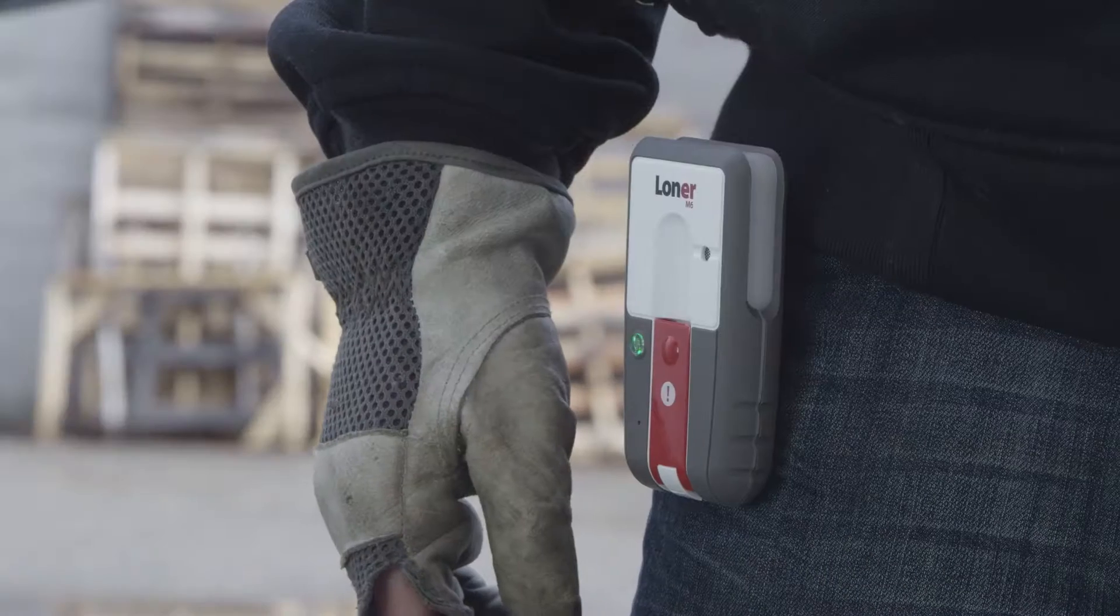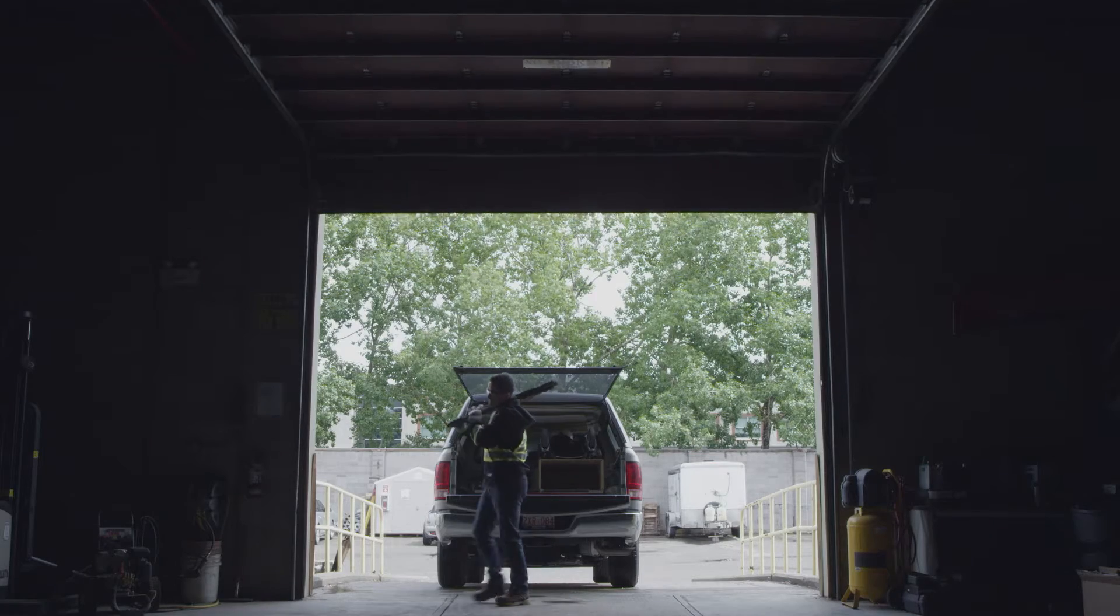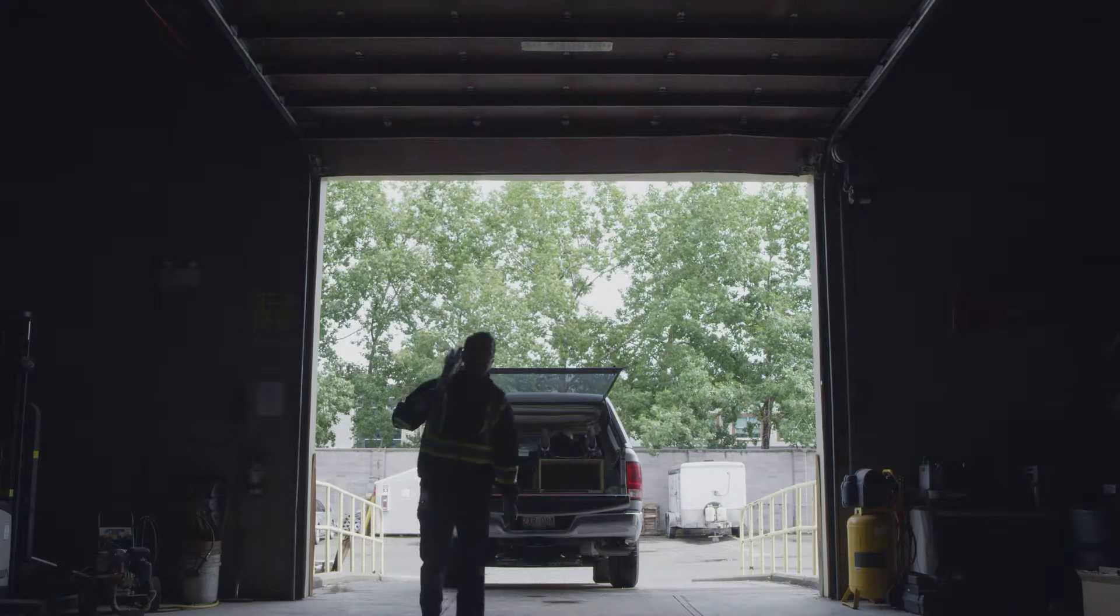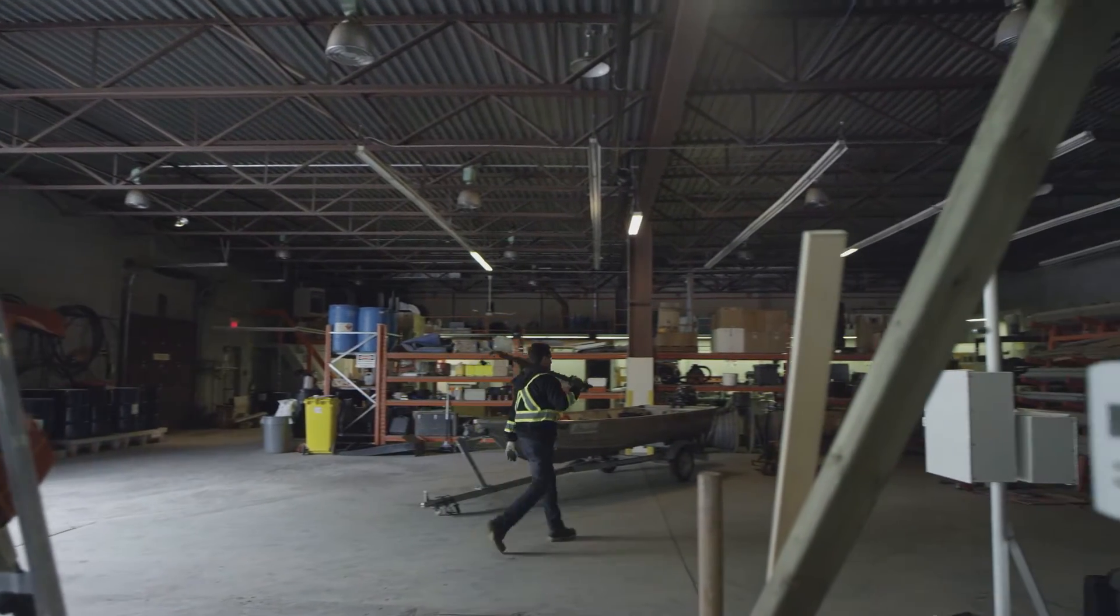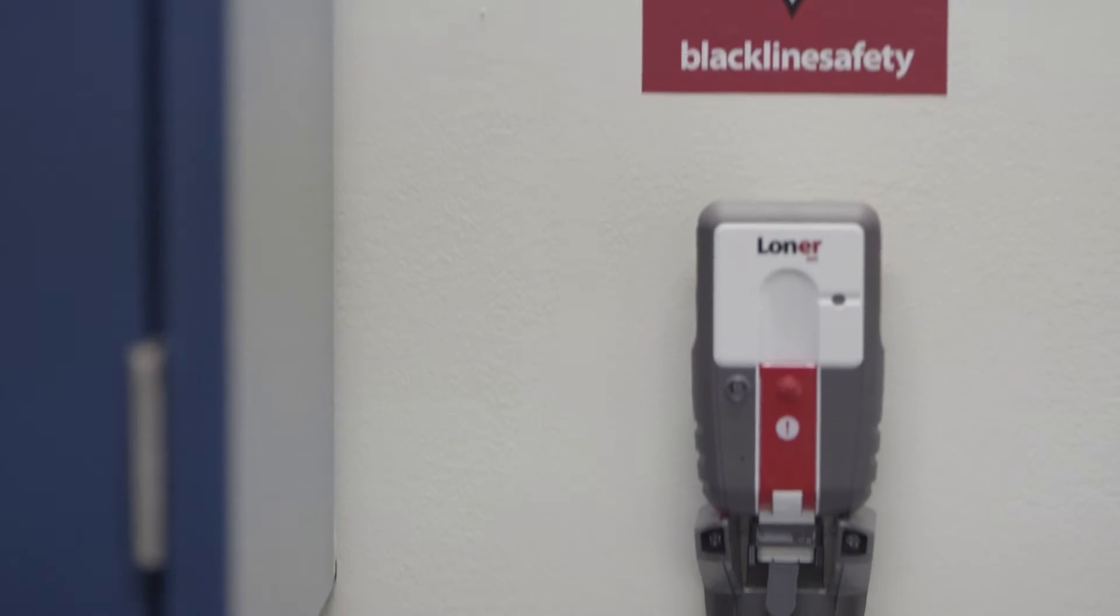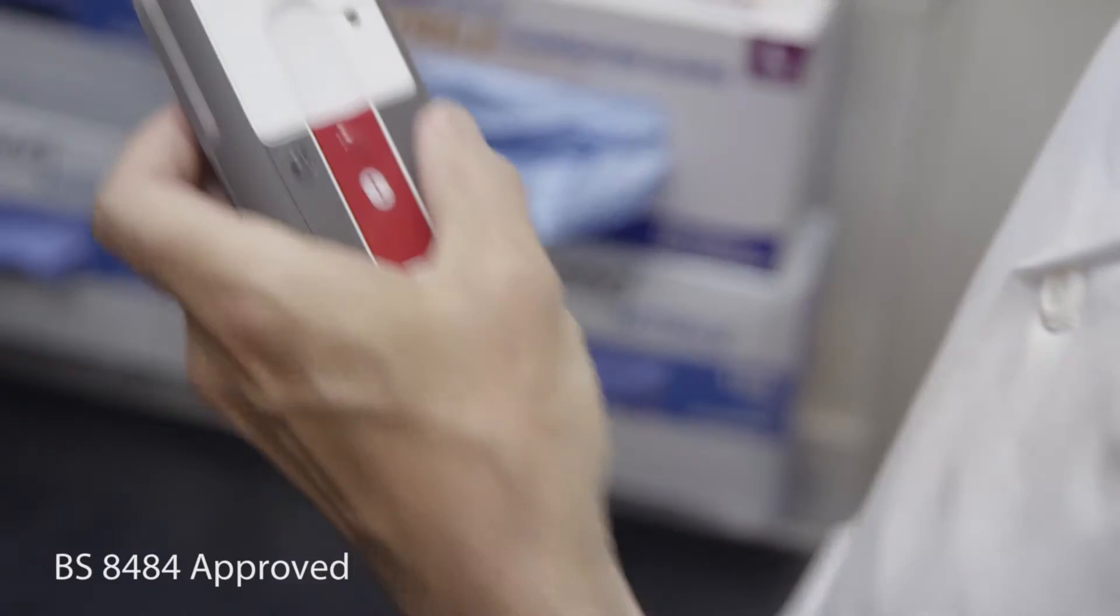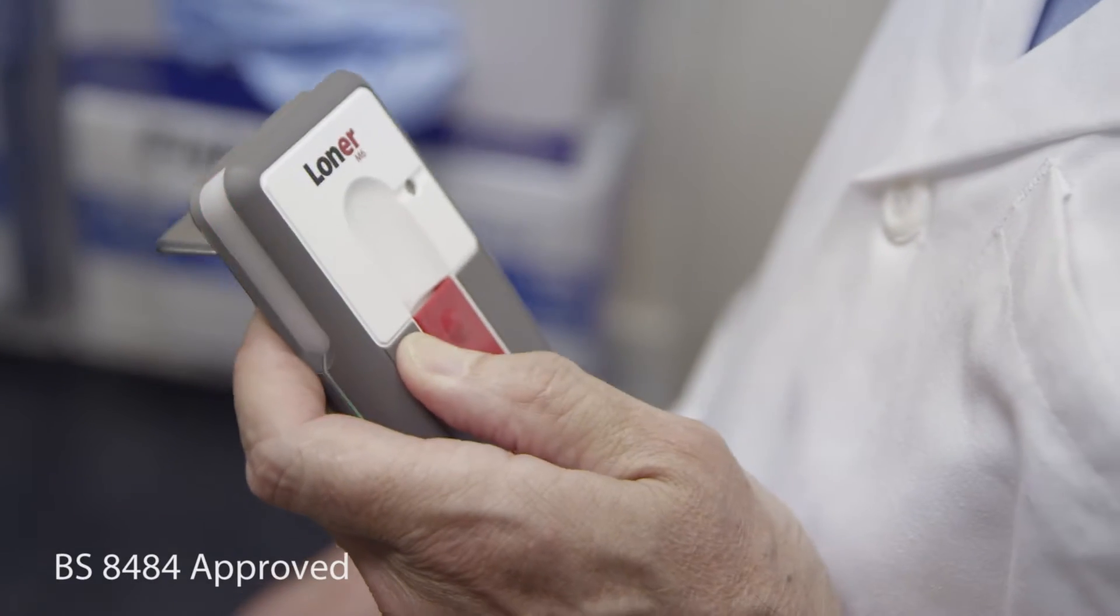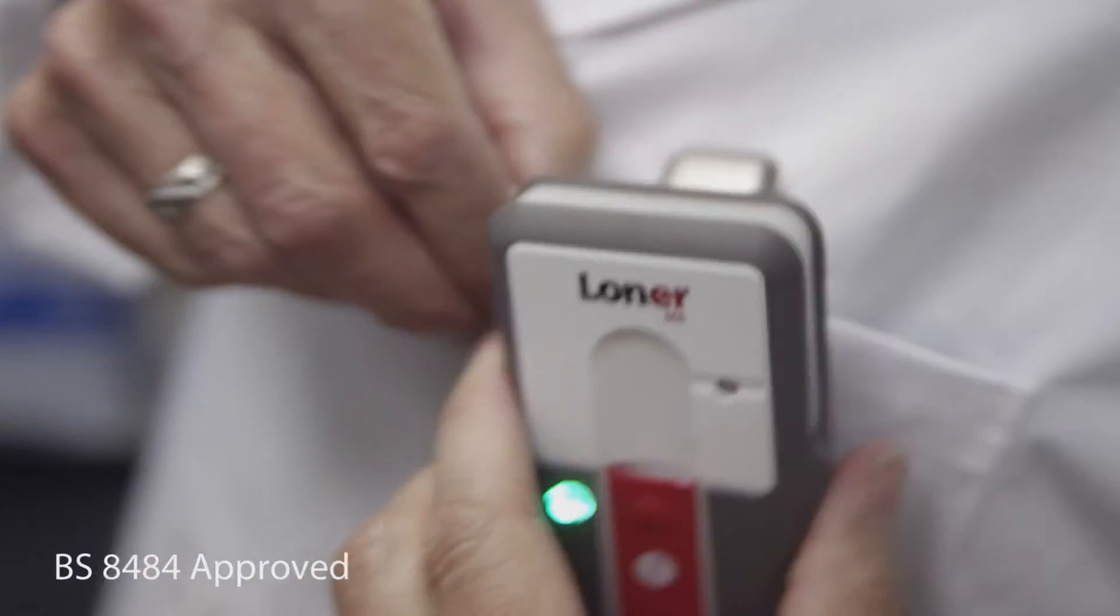The new Loaner M6 is a companion device from Blackline Safety that empowers the fastest possible emergency response. It's easy to use. Your employees turn Loaner M6 on at the start of their shift. The green SureSafe light tells employees that their safety is being monitored.